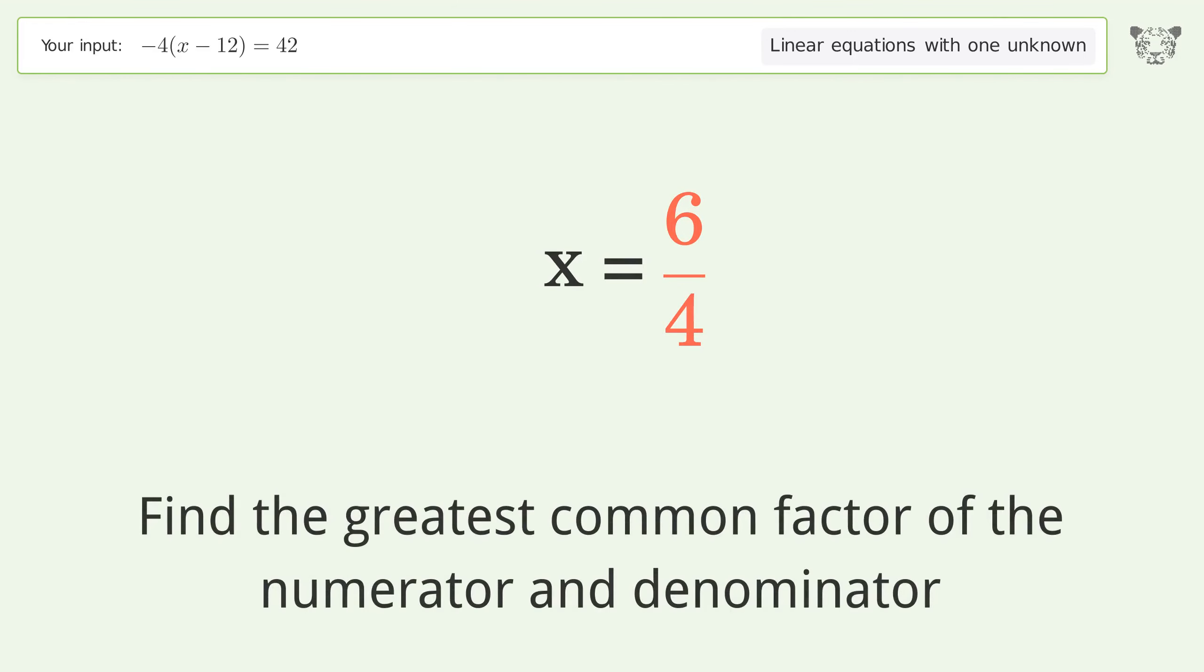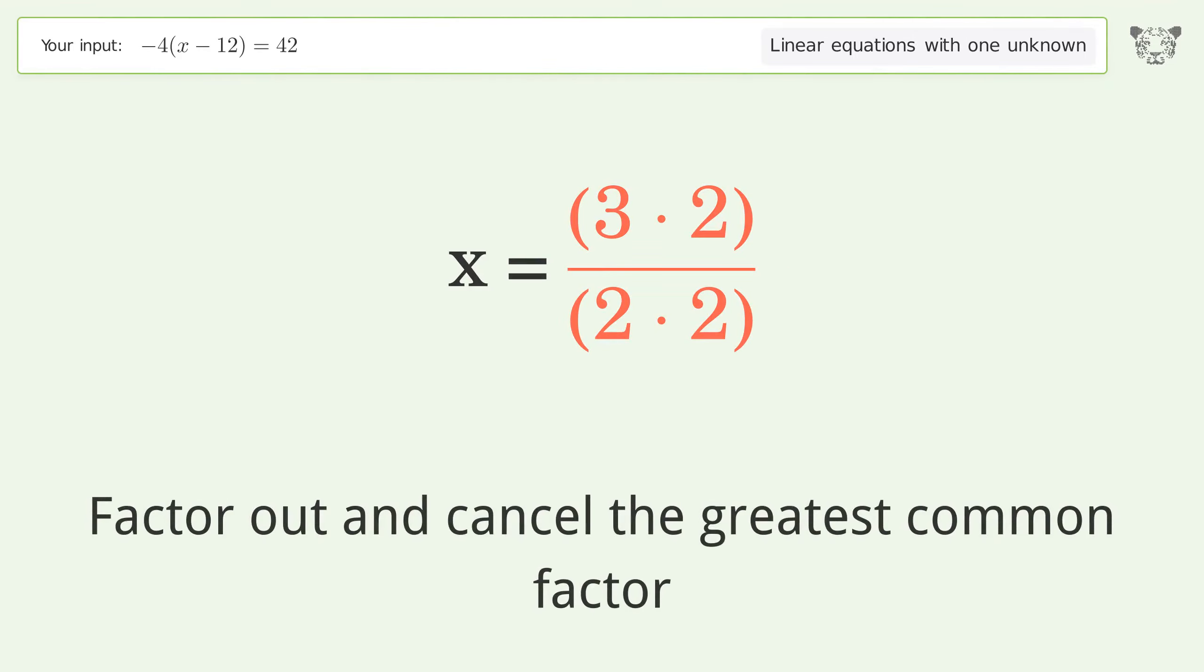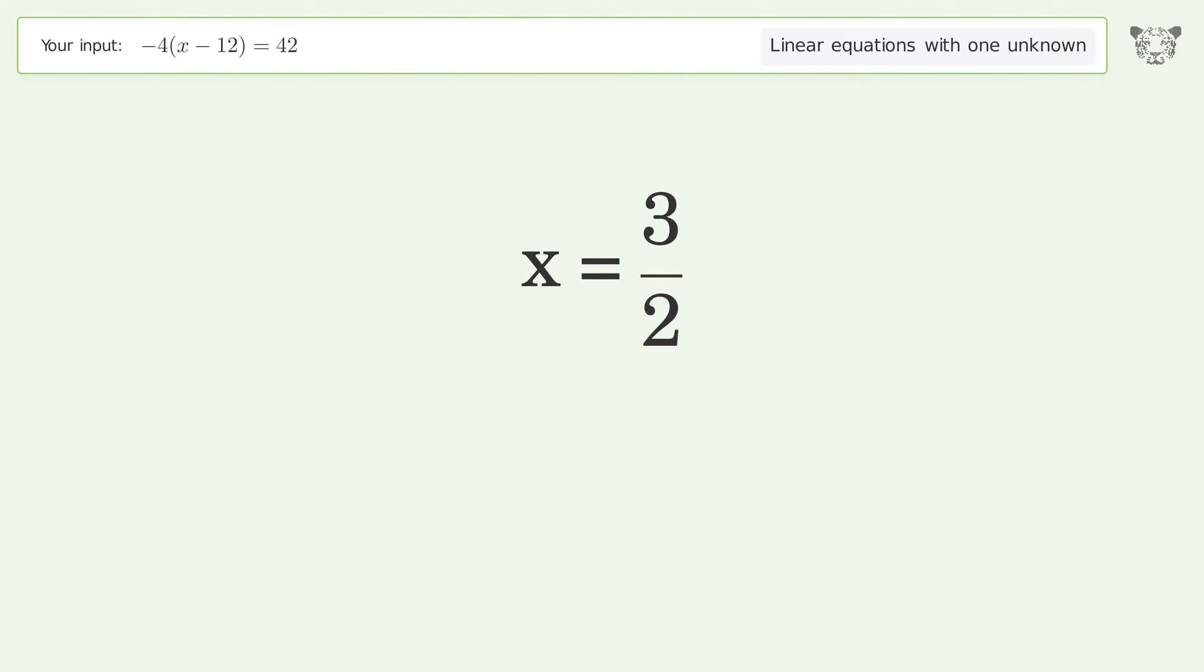Find the greatest common factor of the numerator and denominator. Factor out and cancel the greatest common factor. And so the final result is x equals 3 over 2.